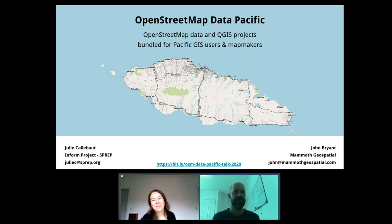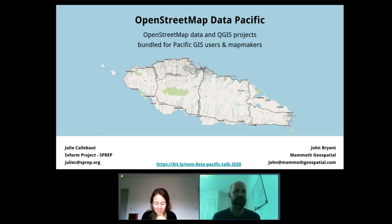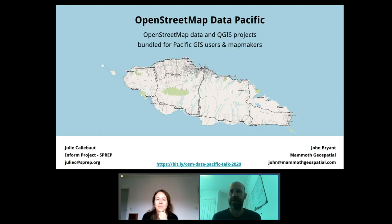I'm John Bryant. I'm a GIS consultant and geospatial developer based in Australia. I've got a small company called Mammoth Geospatial, and I'm really interested in open source software, OpenStreetMap, and open data. Over the last few years I've been really involved in organizing FOSS4G and State of the Map conferences in Australia, New Zealand and the Pacific.